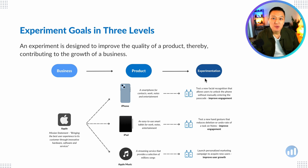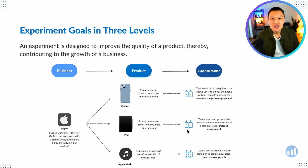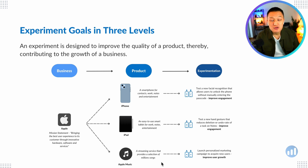These products go through a series of processes to help users get a better experience over time, which in turn helps users purchase Apple products more. For example, an iPhone experiment could be testing new facial recognition that allows users to unlock the iPhone without manually entering the passcode, improving user engagement. For iPad, it could be testing a new hand gesture that reduces deletion or undo rate on notes. For Apple Music, it could be launching a personalized marketing campaign to acquire new users and spur user growth.